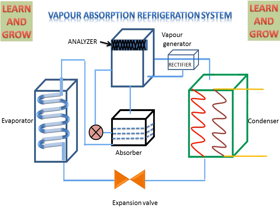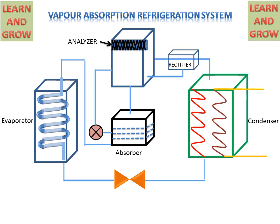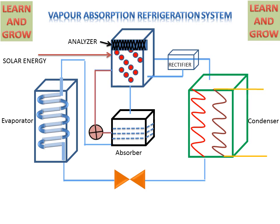Now we see the working of the Vapor Absorption Refrigeration System with Solar Power. Solar energy is used in the Generator for converting liquid into vapor. Solar energy is given to the Generator, and the pump will start working — it will suck the strong solution of the Absorber, which is Ammonia plus Water, and deliver this solution to the Generator, where vapor is formed.